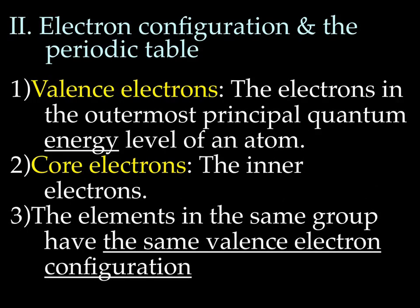So let's talk specifically about electron configuration and the periodic table. Valence electrons are the electrons in the outermost principal quantum energy level of an atom. That's huge.